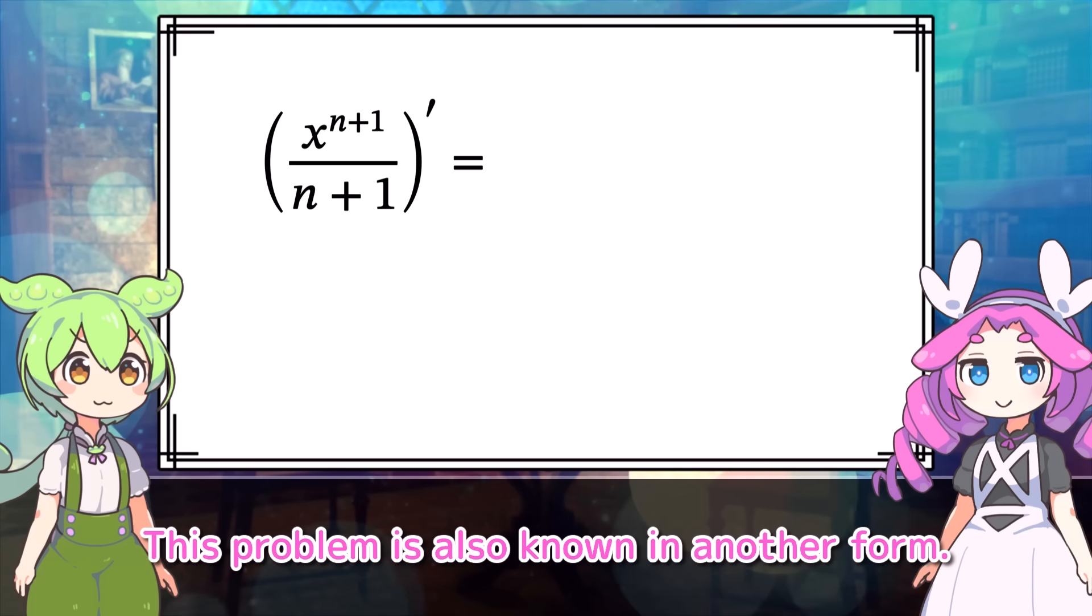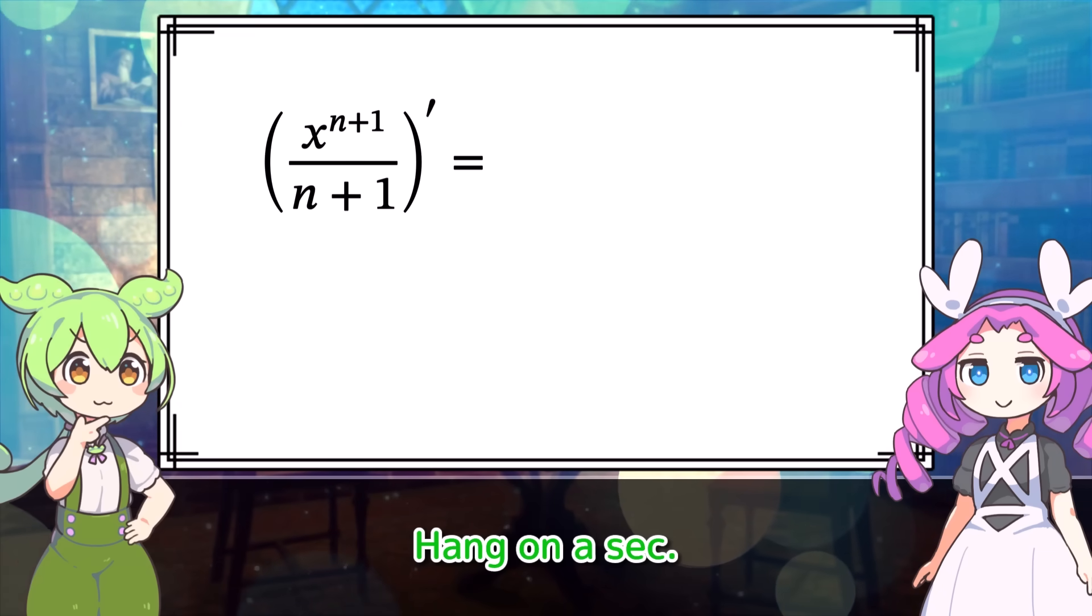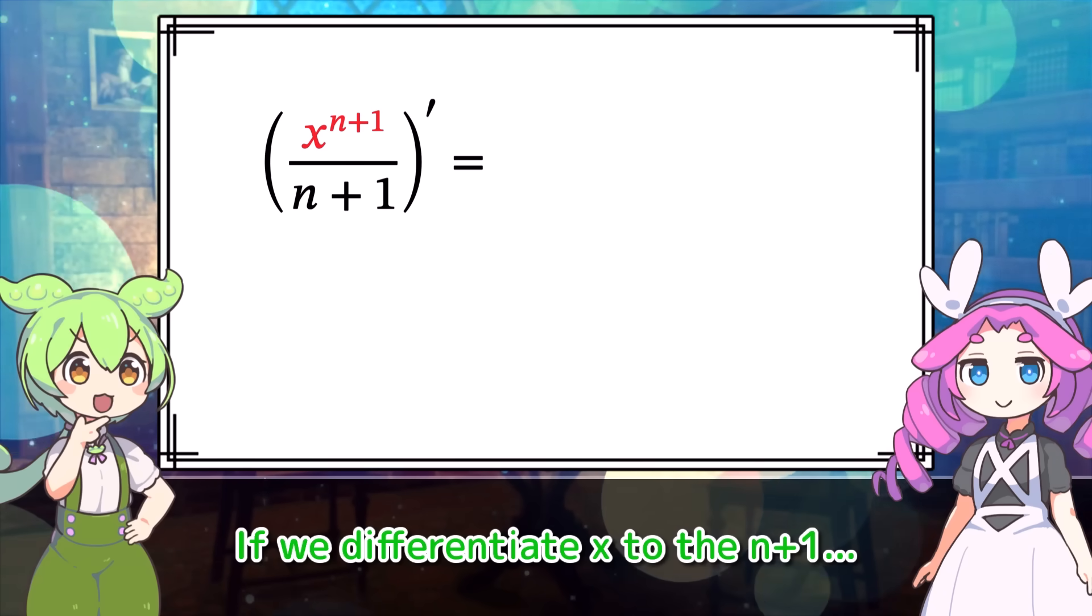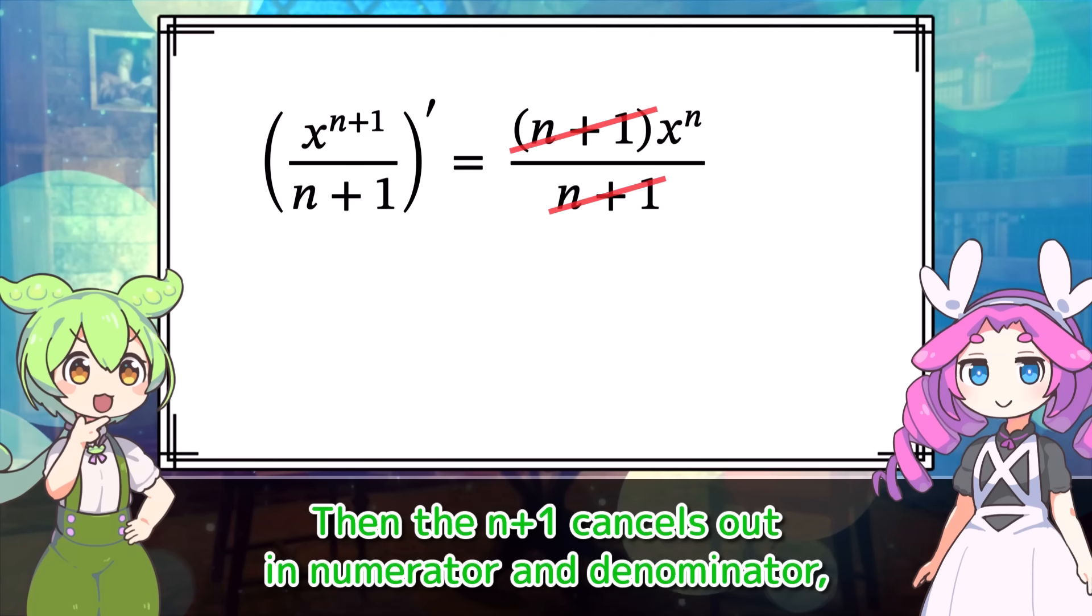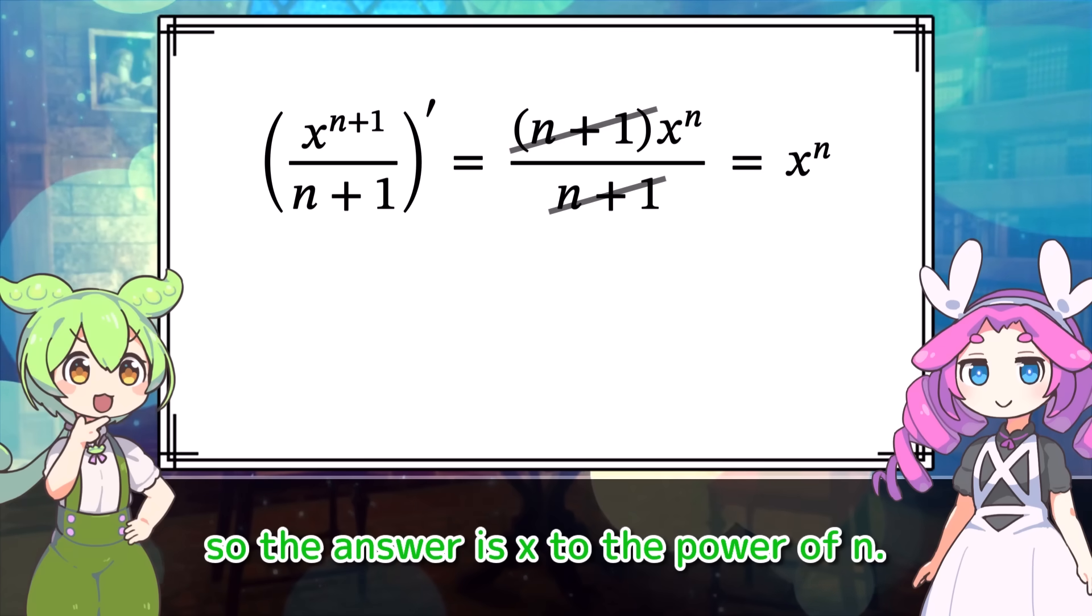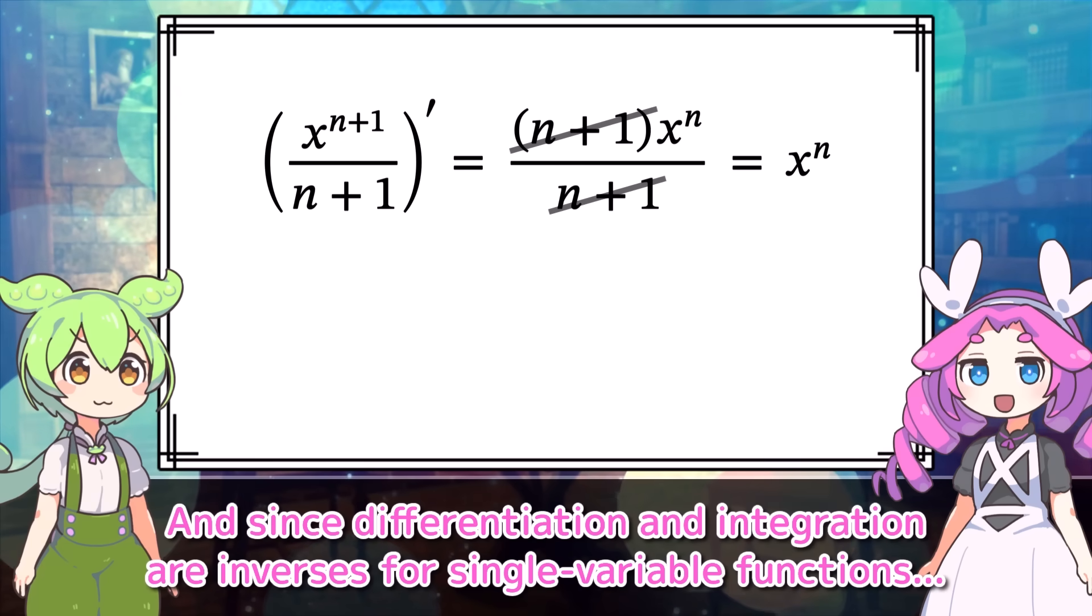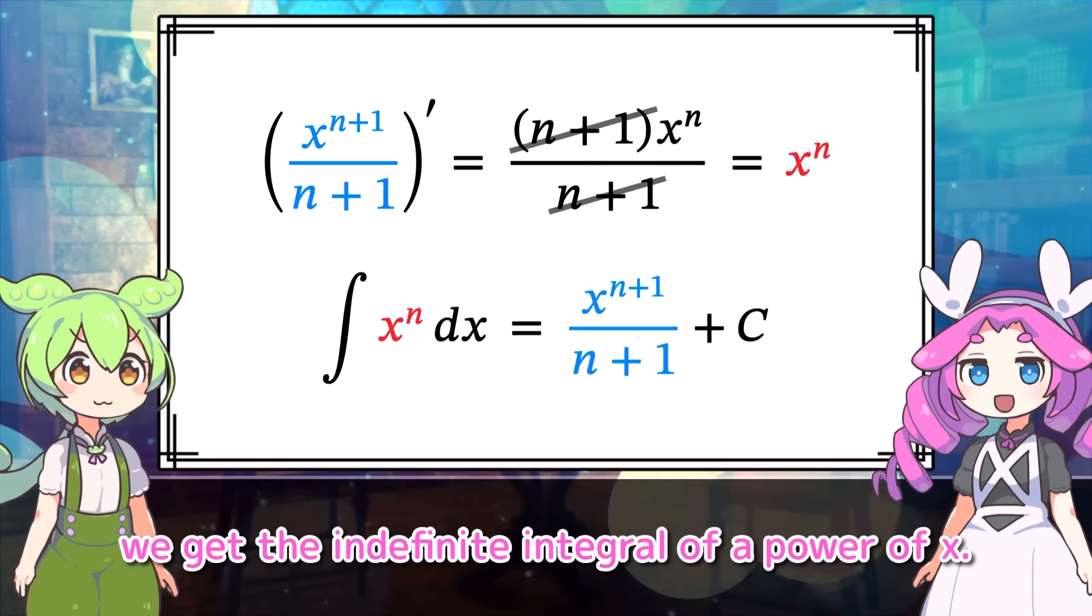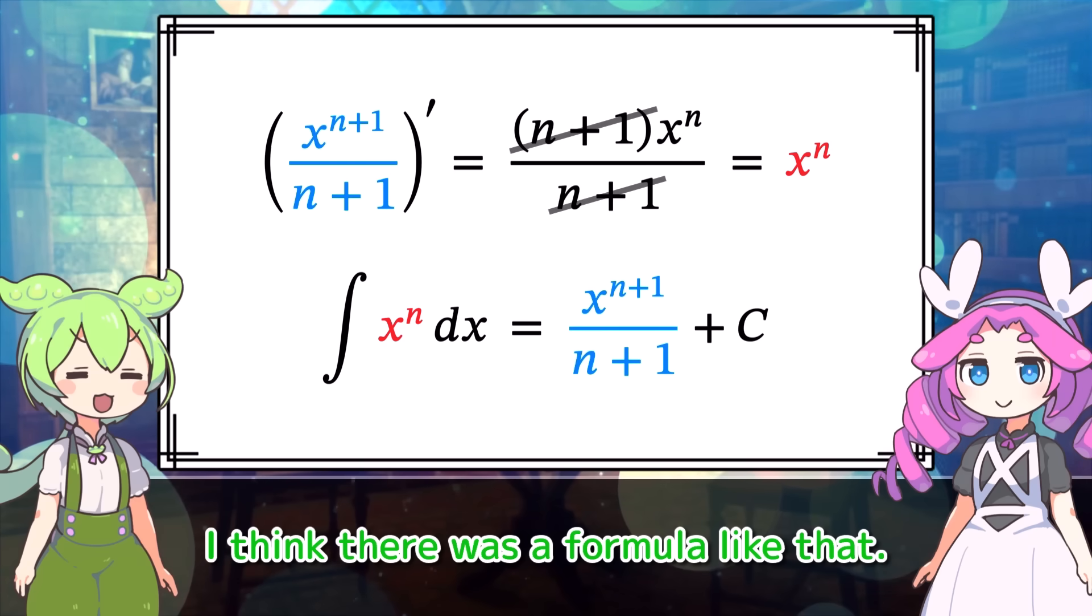This problem is also known in another form. Try calculating this. Hang on a sec. If we differentiate x to the n plus 1, it turns out like this. Then the n plus 1 cancels out in numerator and denominator. So the answer is x to the power of n. Exactly. And since differentiation and integration are inverses for single variable functions, we get the indefinite integral of a power of x. Ah, c is the constant of integration.